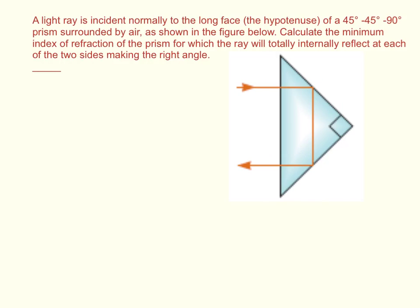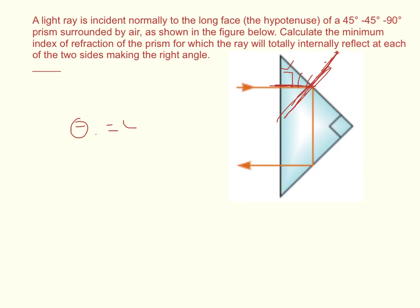We have to ask ourselves: what is the angle of incidence for this reflection? If this is a 45-45 triangle, this is a 90 degree angle here, this is a 45 degree angle, and so this must also be 45 degrees. The face makes a 90 degree angle with the other face, so the angle between the beam and the normal — the angle of incidence — has to be 90 minus 45, which equals 45 degrees. So the angle of incidence the first time is 45 degrees.